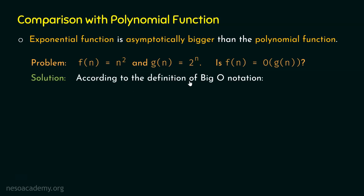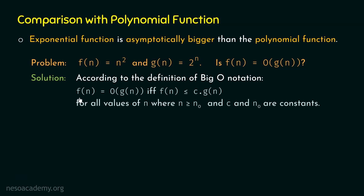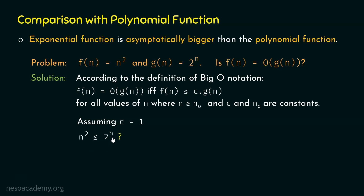According to the definition of big O notation, f(n) is equal to big O of g(n) if and only if f(n) is less than or equal to c times g(n) for all values of n where n is greater than or equal to n0, and c and n0 are constants. With f(n) = n squared and g(n) = 2 to the power of n, let us assume c equals 1. Therefore, f(n) ≤ c·g(n) becomes n squared ≤ 2 to the power of n.